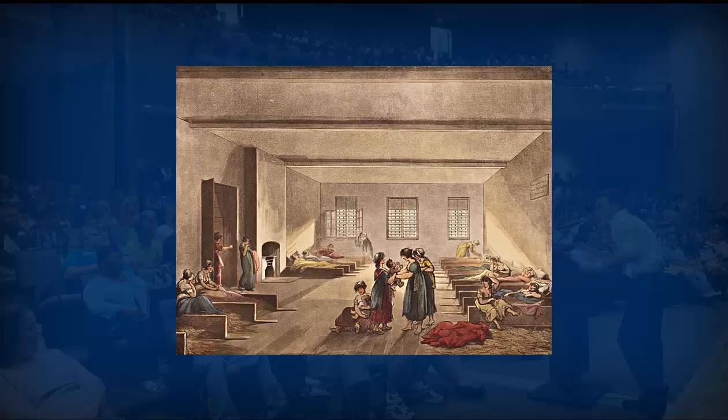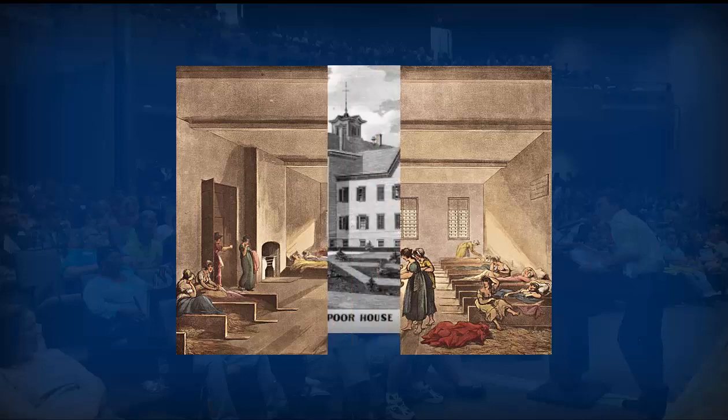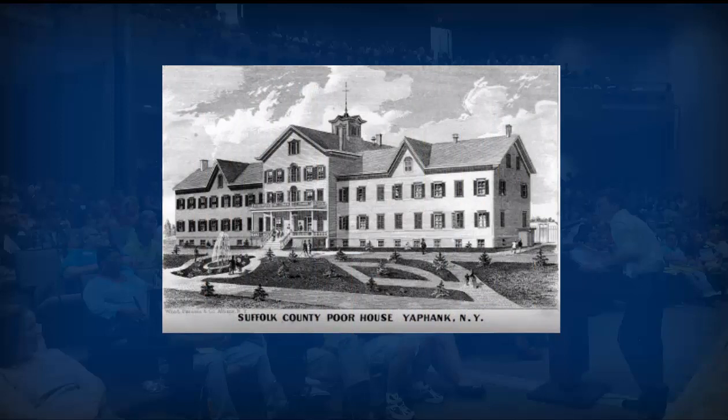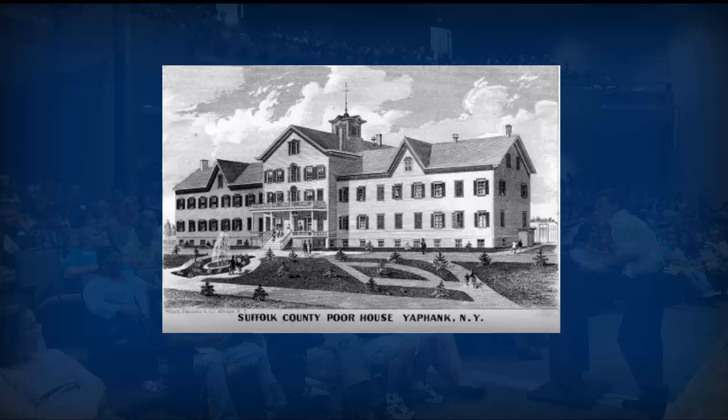Prior to the 20th century the only semi-formalized structure that we had was an almshouse or a poorhouse. It wasn't really the place to go to receive health care — it mainly catered towards the poor, the needy, those more indigent populations. They provided shelter while trying to treat illnesses the best they could, but if you were more wealthy and affluent during this time you did not go to an almshouse because the conditions were so deplorable; you received your treatment in your home.